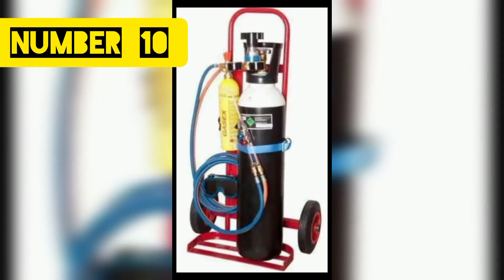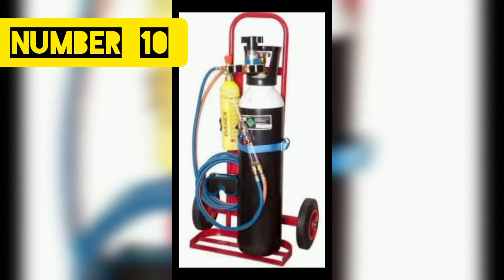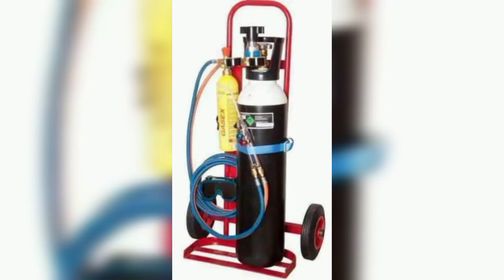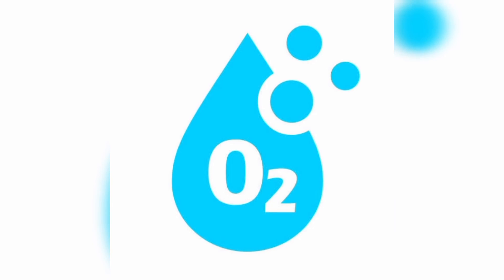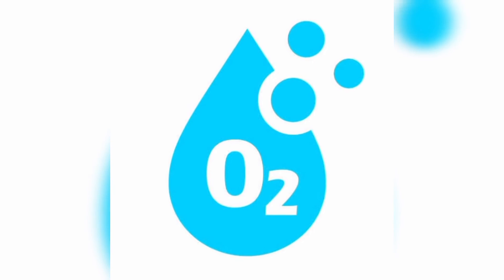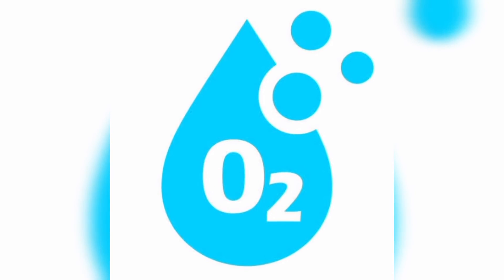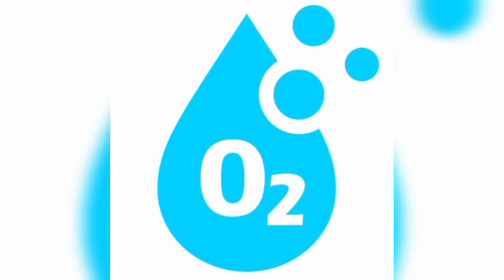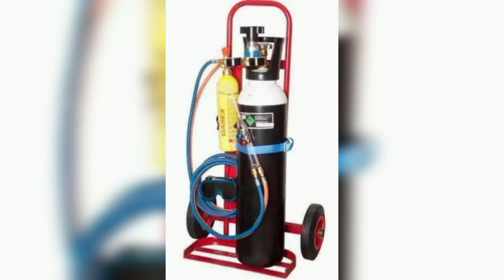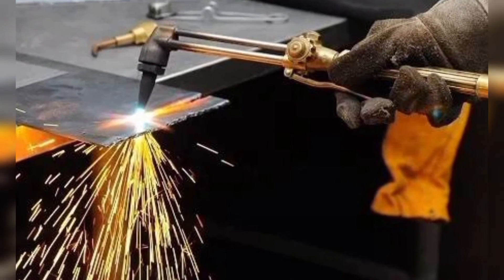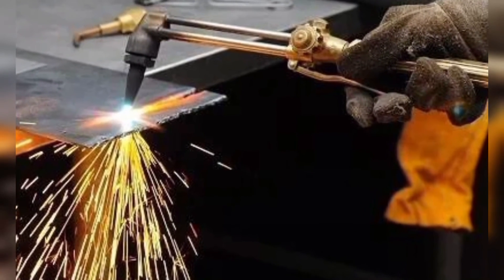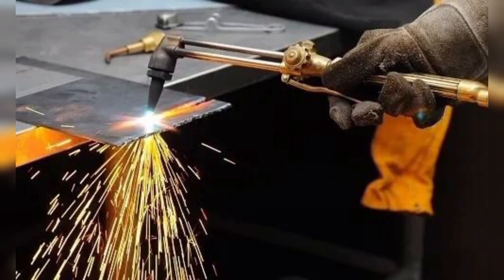Number 10: Oxyacetylene Welding Machine. This machine uses fuel gas along with oxygen as the heating medium. The flame is considered to be the main element, produced at the end of the torch. This flame melts the base metal and potential filler to form a continuous weld.